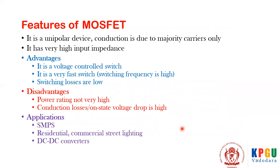Some features of MOSFET: it is a unipolar device, meaning it conducts due to majority carriers only. In contrast, a BJT is bipolar, where both majority and minority carriers contribute to conduction. MOSFET has very high input impedance.